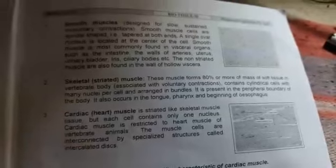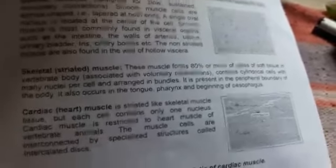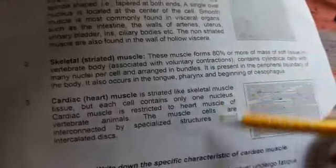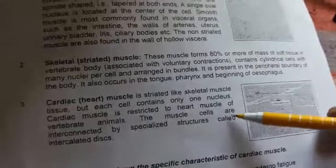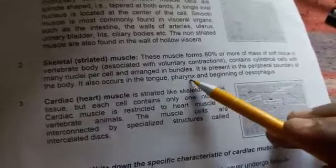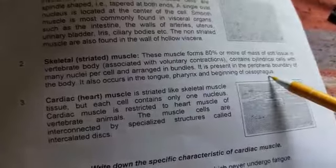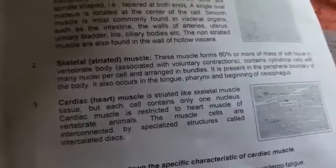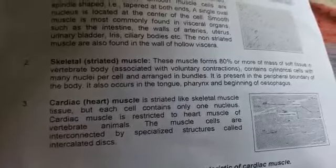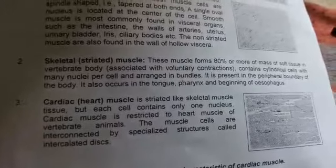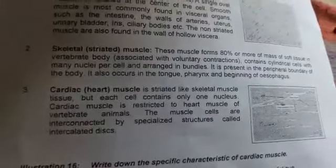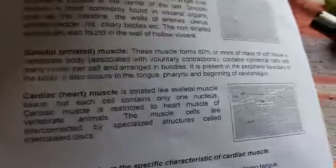These are present in large amounts at the peripheral boundary of the body. It also occurs in the tongue, pharynx, and beginning of the oesophagus — tongue, pharynx aur oesophagus ke beginning mein skeletal striated muscle hote hain.